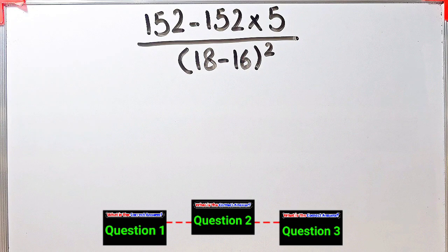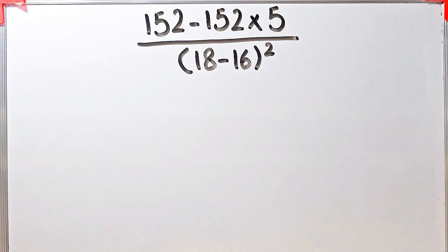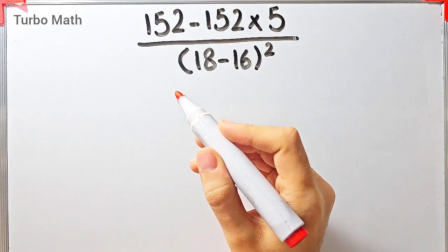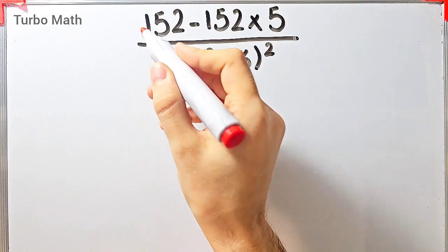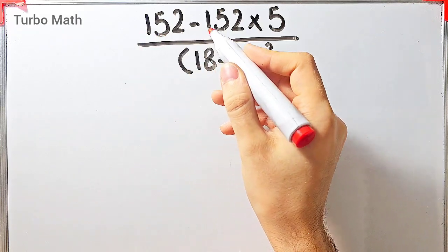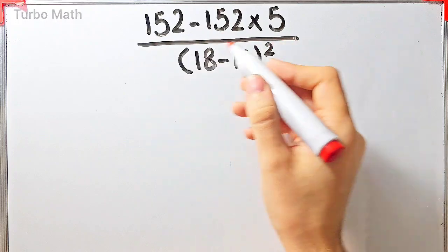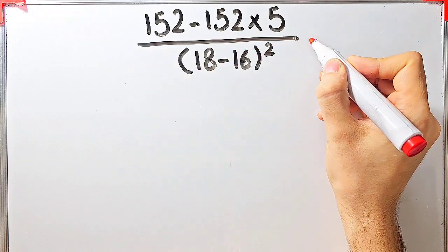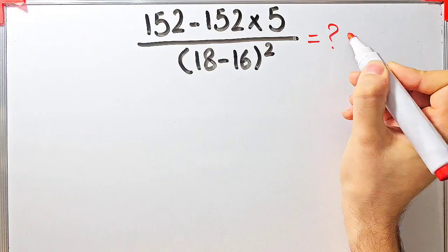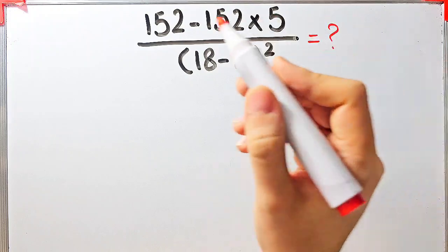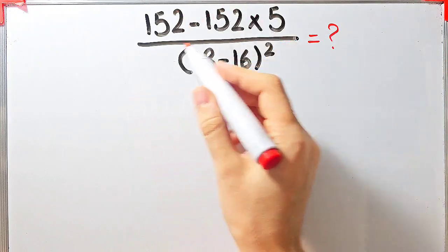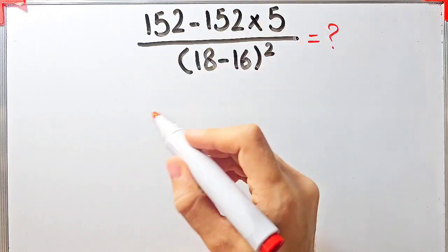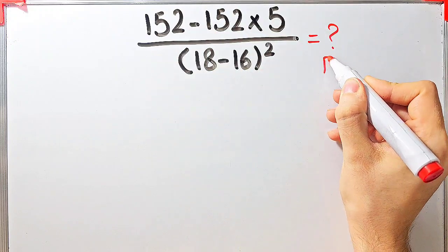Hi friends, welcome to Turbo Math channel. In this video we are going to solve three questions about the PEMDAS rule. In the first question we have 152 minus 152 times 5, then divided by open parentheses 18 minus 16 close parentheses, then all of them to the power of 2. To solve this question we need to follow the order of operations, which is PEMDAS.